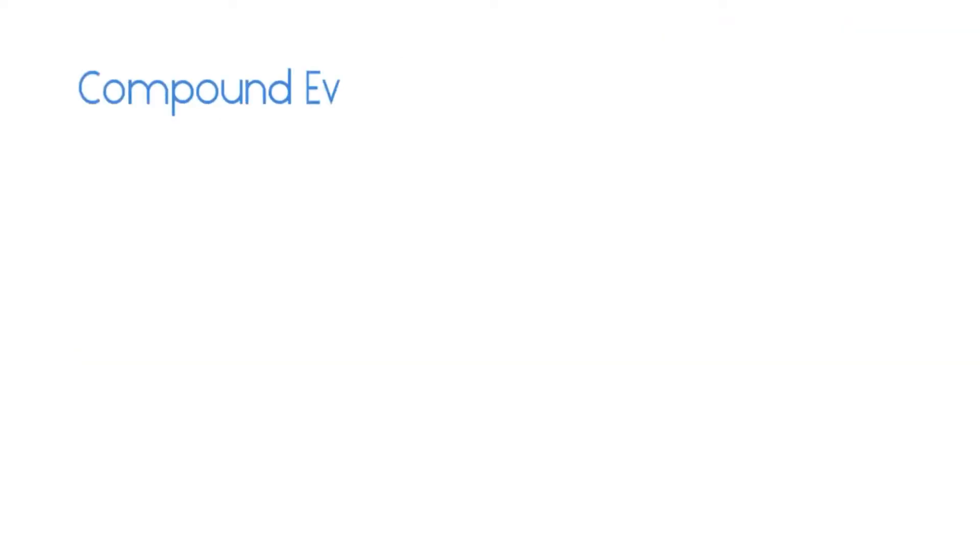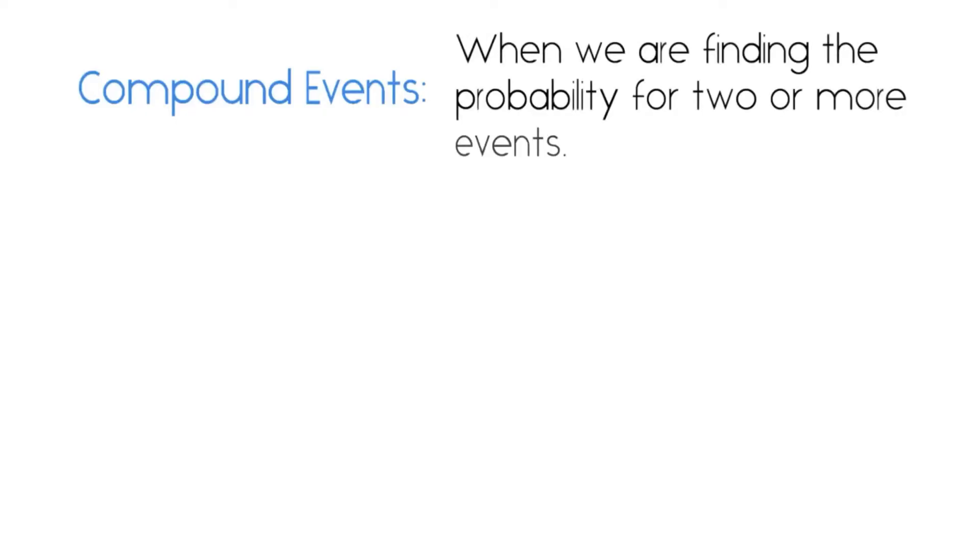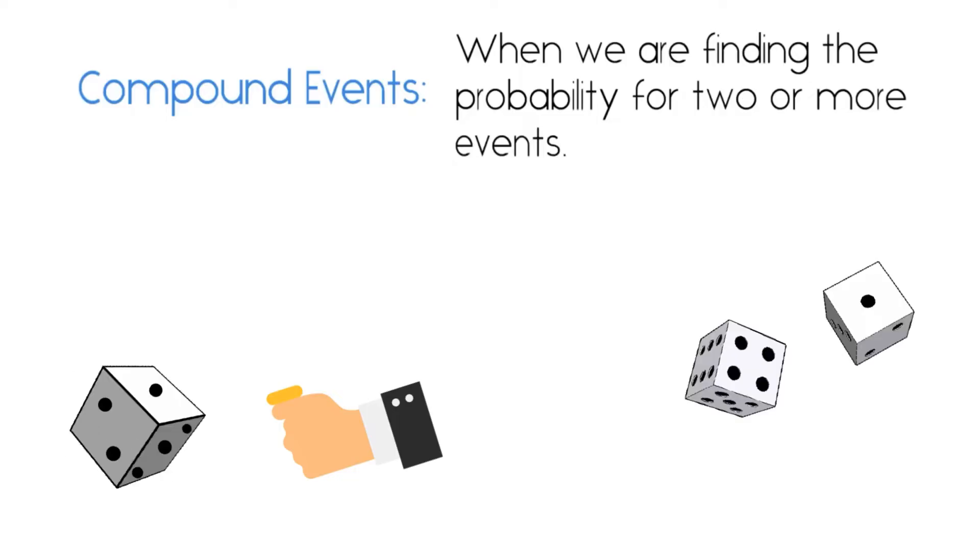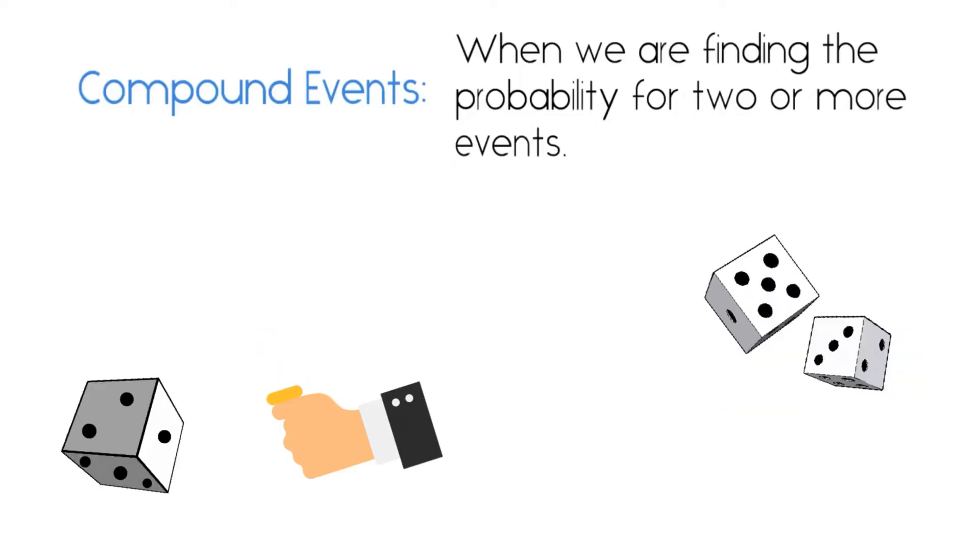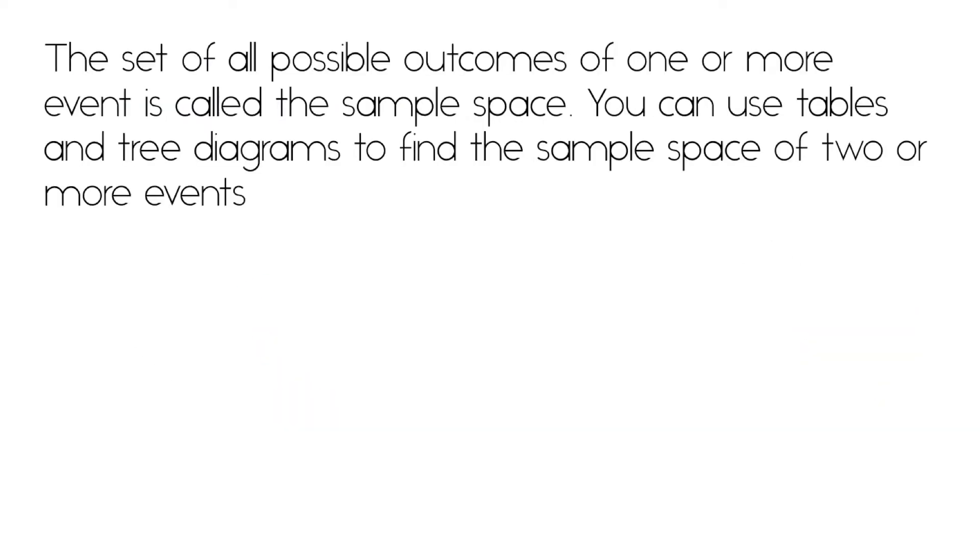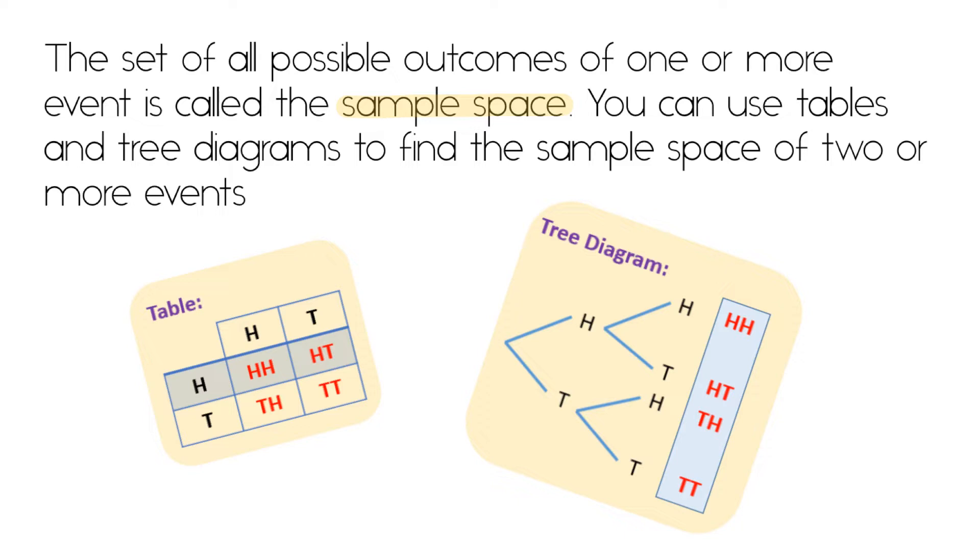Compound events is when we're finding the probability for two or more events. So for example, rolling a dice and flipping a coin, or rolling two different dice. The set of all possible outcomes of one or more event is called the sample space, and you can use tables and tree diagrams to find the sample space of two or more events.